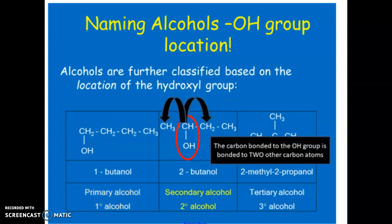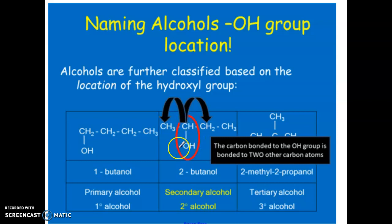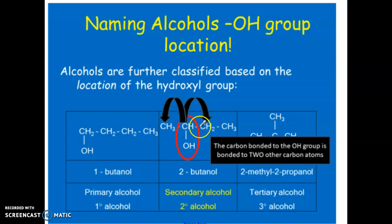A secondary alcohol is where you have two carbons attached to the carbon that bears the OH group. It's always in reference to the carbon that has the OH group on it — this carbon has two other carbons, or you can think of it as having only one other hydrogen attached to it.